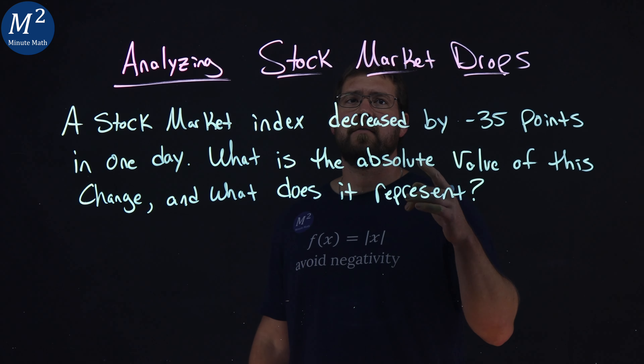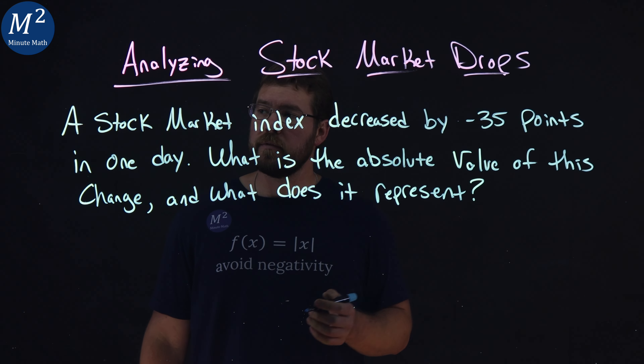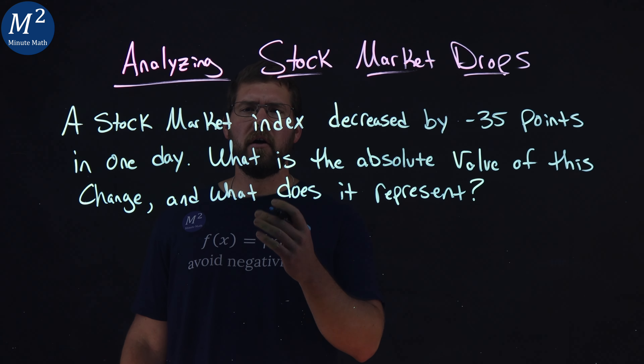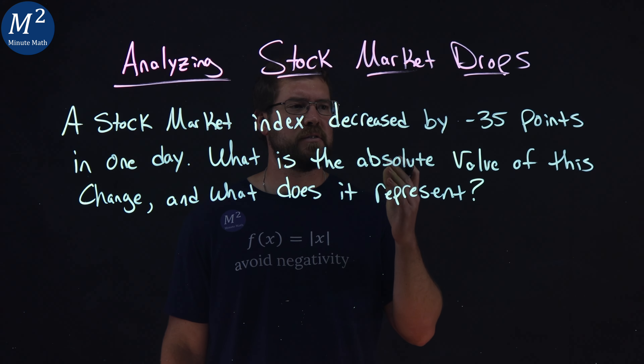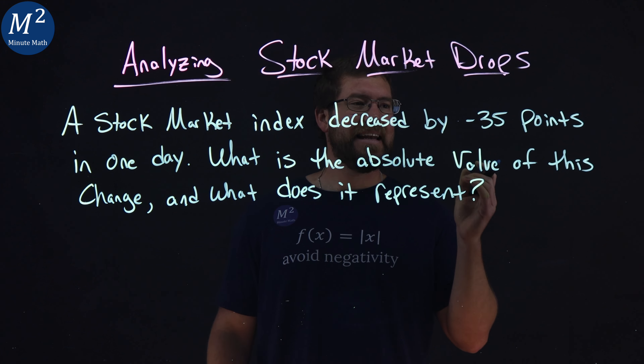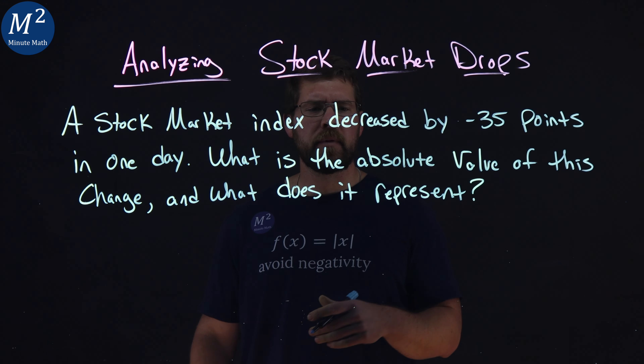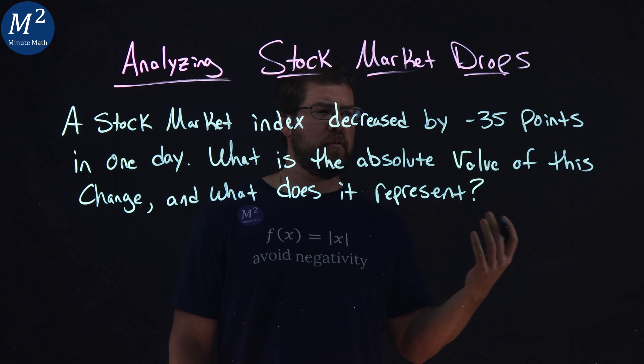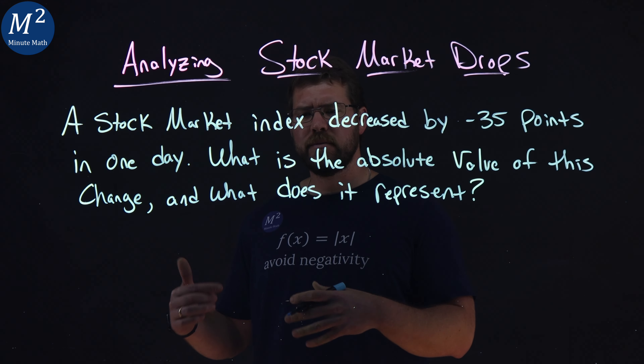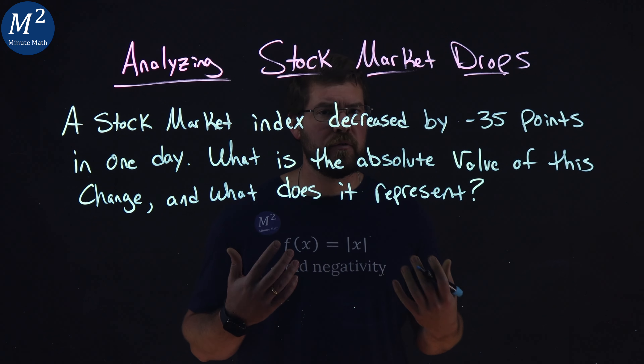Let's learn about analyzing stock market drops. A stock market index decreased by negative 35 points in one day. What is the absolute value of this change, and what does it represent?